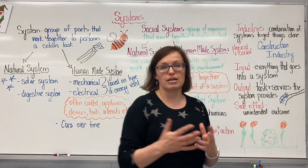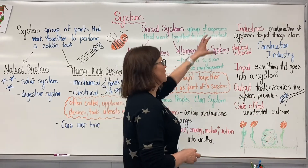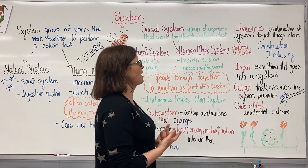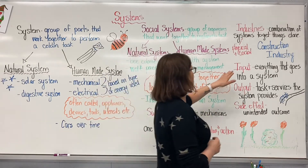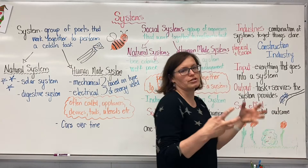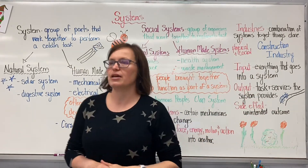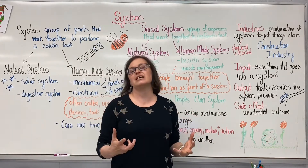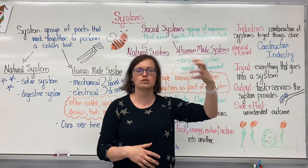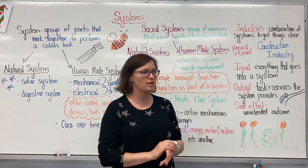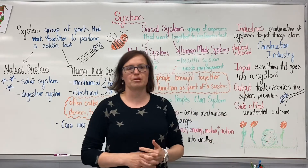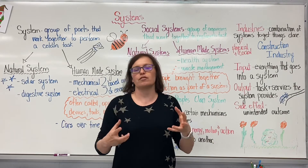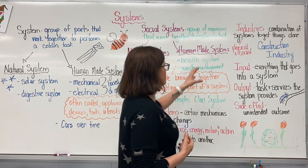Over time, through innovation and progress, we've developed industries around these systems. An industry is that combination of systems working together to get things done — those physical and social systems coming together. If you think about construction, the construction industry involves tools, equipment, and machines for actual construction — digging holes, building homes, lifting things, pouring things, mixing things. But there are also social systems in place: land surveyors, real estate, the people involved in making that system work. That would be an industry.